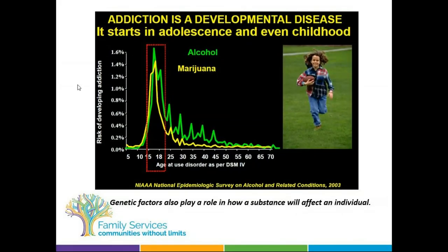Looking at the graph — alcohol in one line and marijuana in yellow — we can see that between the ages of early teens into the early 20s, when the first consumption of alcohol starts, there's much higher risk of developing substance use disorder. If someone starts drinking at age 25 or 30, the risk of developing substance use disorder becomes much lower.